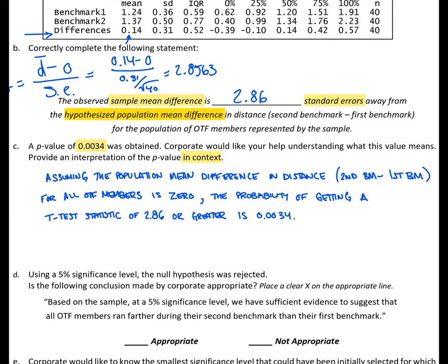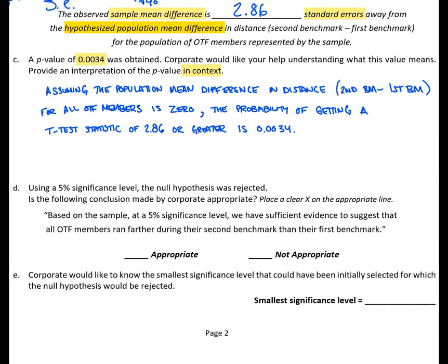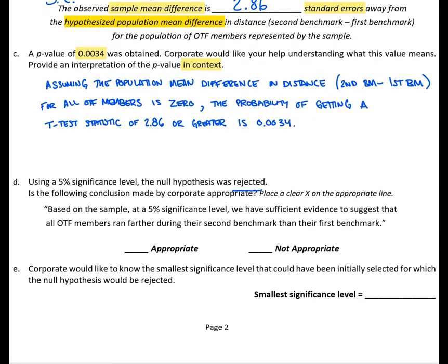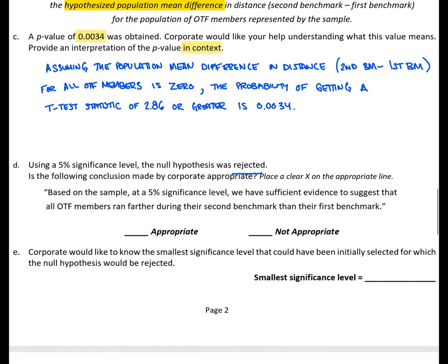Instead of or more extreme, we want to be specific with the direction here. Remember the direction is always in the direction of the alternative hypothesis. So here we simply have to say this value or greater than. Instead of the test statistic, we could have also said the probability of getting a sample mean difference of 0.14 or greater is 0.0034. So there were definitely a couple different ways to write this interpretation. Moving on to question D, using a 5% significance level, the null hypothesis was rejected. Is the following conclusion made by corporate appropriate? Based on the sample at a 5% significance level, we have sufficient evidence to suggest that all OTF members ran farther during their second benchmark than their first benchmark.